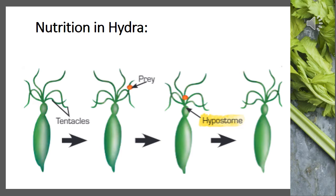Once Hydra catches the prey, it kills it using stinging cells — small insects get paralyzed by neurotoxins released by these stinging cells. The prey is then killed and passed into the mouth. Digestive juices inside the body are secreted, and digestion takes place within the hollow cylindrical body. Nutrients are then absorbed and assimilated, and transported throughout the entire body.